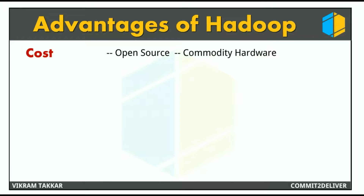The first advantage is cost. Hadoop being open-sourced and using commodity hardware provides a cost-effective model, unlike traditional databases which require expensive hardware and high-end processors. The problem with traditional relational database management systems is that it is extremely costly if you want to scale to process massive volumes of data. To reduce cost, many companies try to sample down and classify data, which may not give them a correct picture of the business. The raw data would be archived or deleted as it would be too costly to save it in a database.